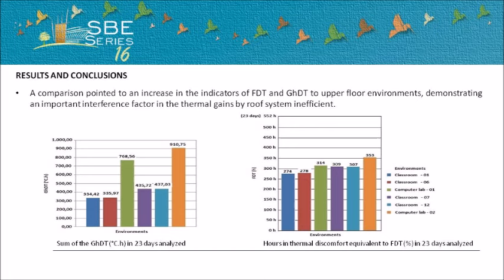A comparison pointed to an increase in the indicators of FDT and GHDT for upper floor environments, demonstrating an important interference factor in the thermal gains caused by an inefficient roof system.